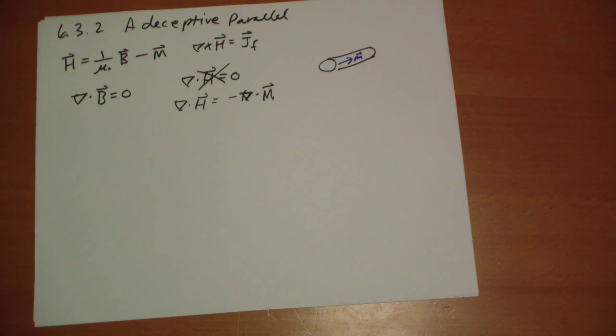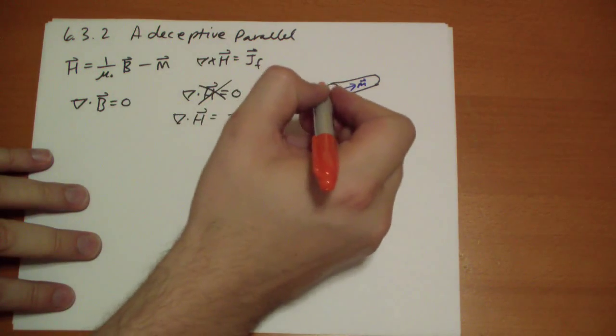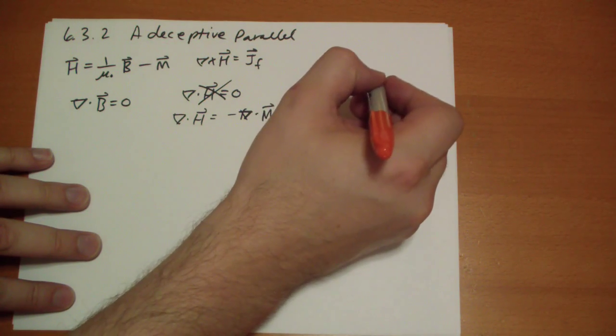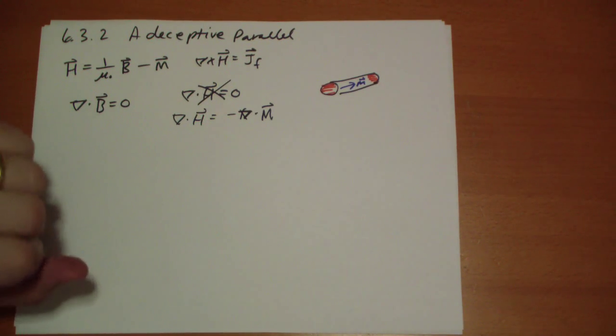And since the divergence of that M vector is not 0, and let me just kind of highlight where you can look to see that the divergence is not equal to 0. The H vector is not going to be 0 throughout.